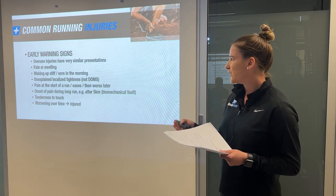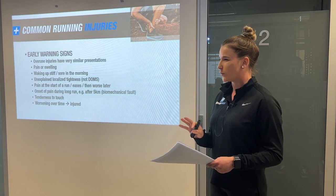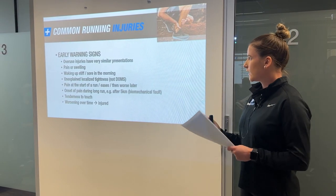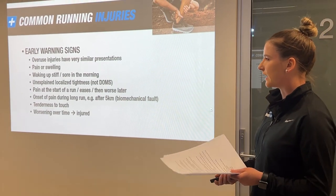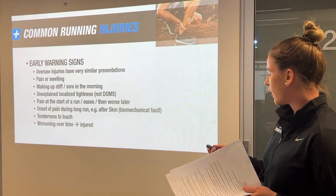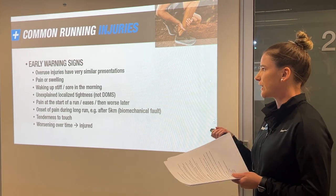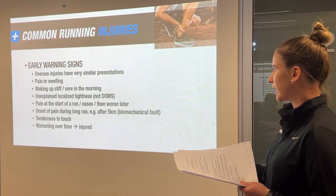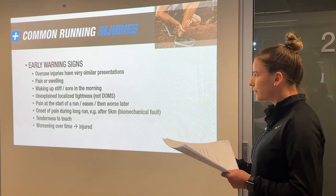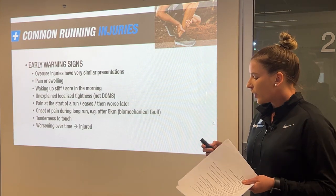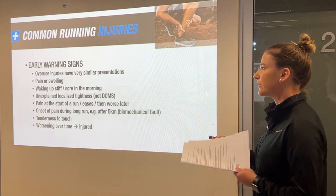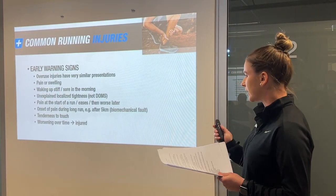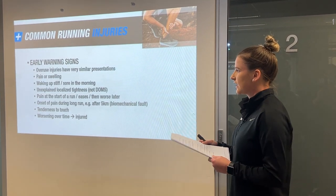Understanding injury means thinking about early warning signs you can tune into. Common overuse injuries often start quite similarly. There may be some biomechanical flaw in your running gait, but they often present similarly. Pain or swelling anywhere — generally around the lower limb — is where you'll commonly see it. Pay attention to it.